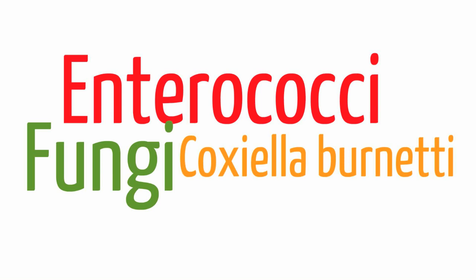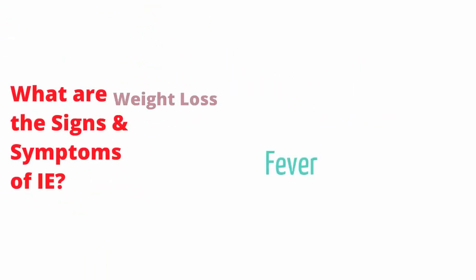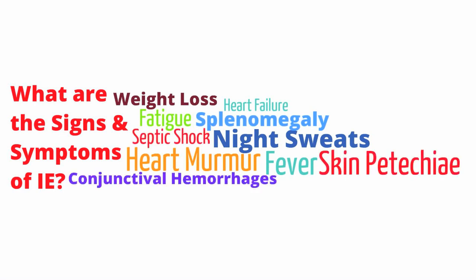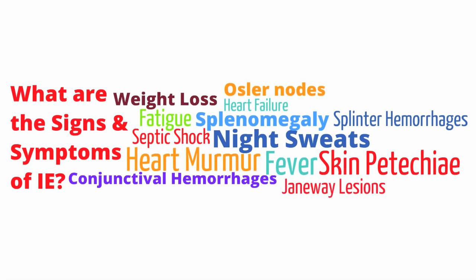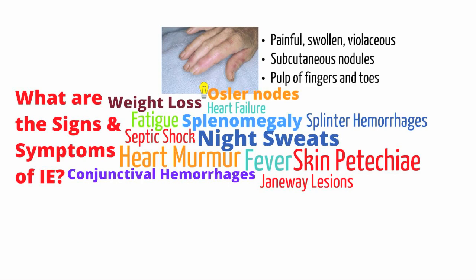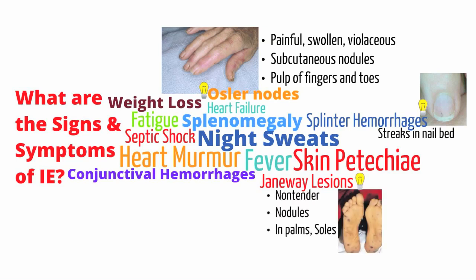There are several clinical signs and symptoms you need to be aware of. These include fever, weight loss, fatigue, heart failure, night sweats, heart murmur, splenomegaly, skin petechiae, conjunctival hemorrhages, septic shock, Osler's nodes, splinter hemorrhages, and Janeway lesions. Osler's nodes are painful swollen violaceous nodules on the fleshy part of the fingers and toes. Splinter hemorrhages appear as streaks in the nail bed that are maroon and turn black — they are due to emboli. Janeway lesions are non-tender nodules in the palms and soles.